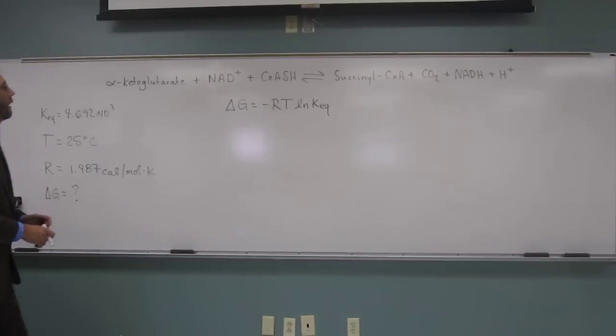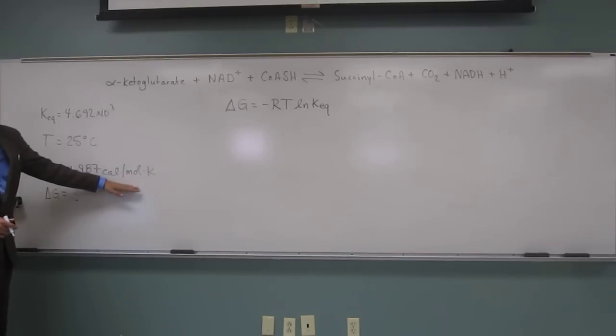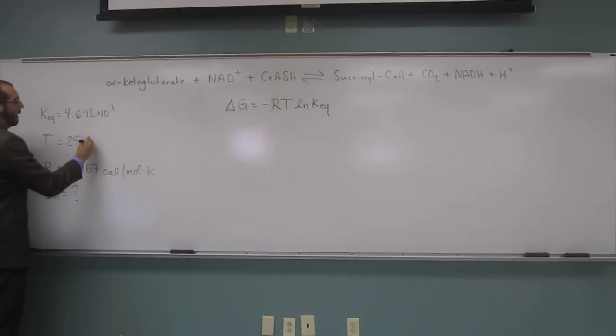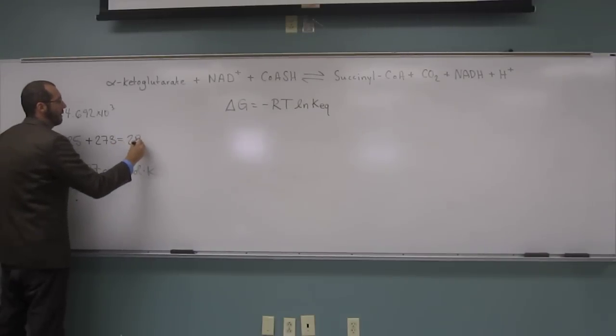And the other thing this constant tells us is what? That the temperature has to be in Kelvin. So it's in Celsius, so we have to add 273 to it. So what do we get? 298 Kelvin.